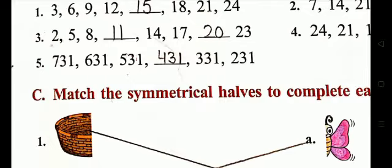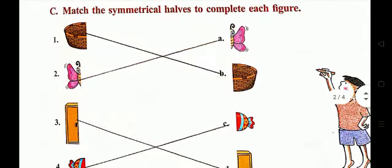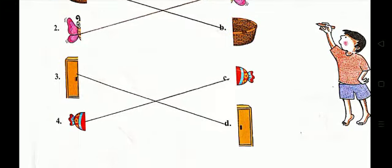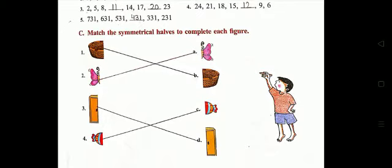Part C: match the symmetrical halves to complete each figure. This is very simple — you only have to match. You can see one half will match with V; a butterfly half is there. An Almira is there so it will go with G, and a candy is there so it will go with C.